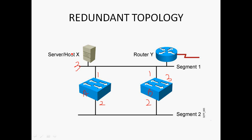Router Y is connected to Switch B Fast Ethernet 0/3. Host X can send frames to Router Y — first it sends to Switch A, which broadcasts through Fast Ethernet 0/1 and 0/2. The advantage of redundant topology is that if one link fails, we can alternatively use another link. But the drawbacks are broadcast storms, multiple frame copies, and MAC address database instability.